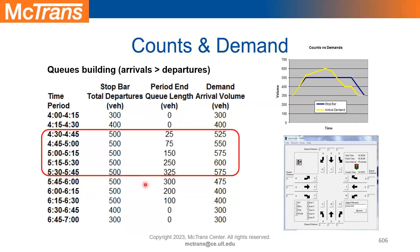Here is another example to make sure everyone understands. I have a signalized intersection with a sensor on the stop bar that tells me, for every 15-minute analysis period, how many vehicles pass through. It reports numbers like 300, 400, or 500. We also have a means of seeing how much queue we have at the signalized intersection at the end of each 15-minute period, which allows us to estimate demand.